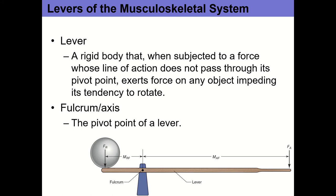Let's talk about levers. A lever is a rigid body that, when subjected to a force whose line of action does not pass through its pivot point, exerts force on any object impeding its tendency to rotate. The key points are that the lever is a rigid body, and to create a lever we need a point of rotation referred to as the fulcrum or axis. There are two arms: the force or effort arm, which runs from the axis to where muscular force is applied, and the resistance arm, which runs from the axis to the weight being lifted.